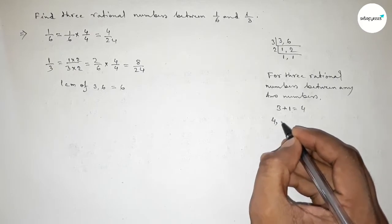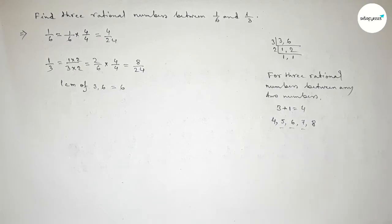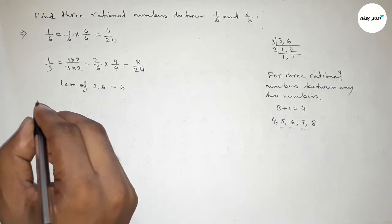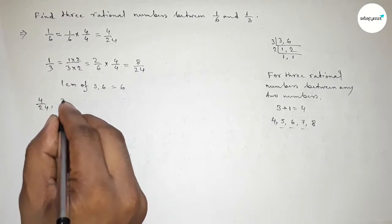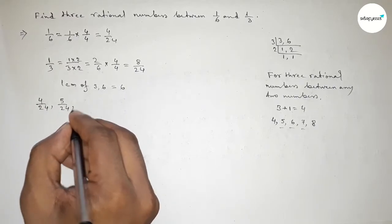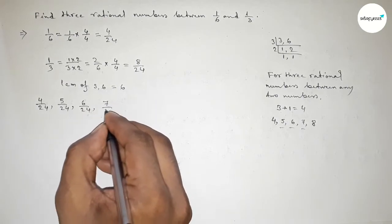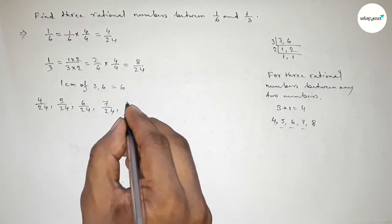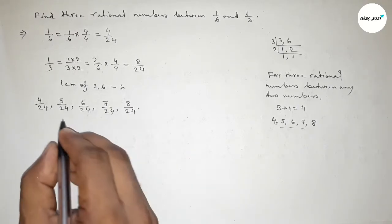So these are the three rational numbers. Now write down here all the rational numbers. So first one: 4 over 24, 5 over 24, 6 over 24, 7 over 24, and 8 over 24.